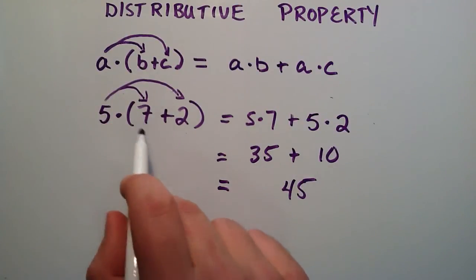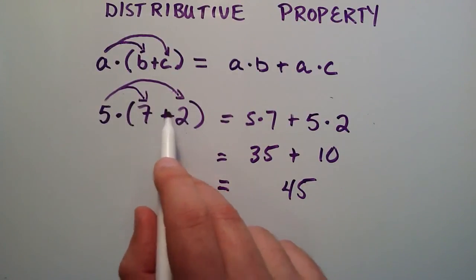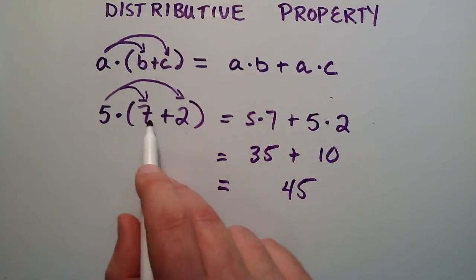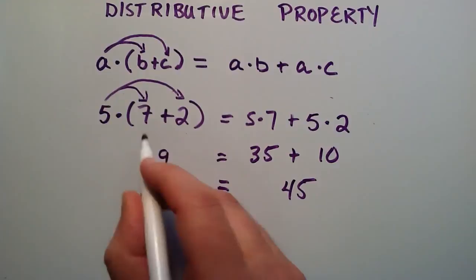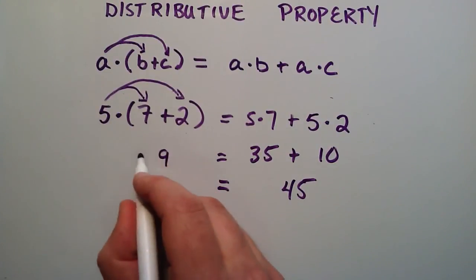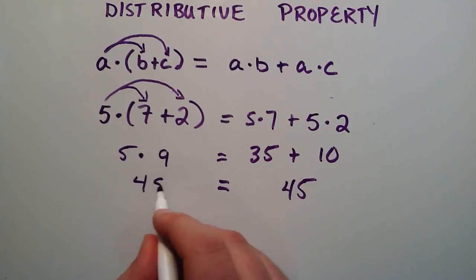So just to have this sink in, I might as well do it on this side as well. If we were to do this side, we do what's inside the parentheses first, because that's what order of operations tells us to do. 7 plus 2 is going to give us 9, and then that result multiplied by the 5. 5 times 9 equals 45.